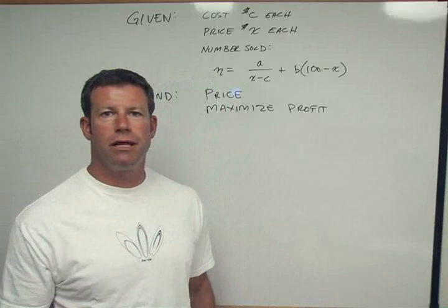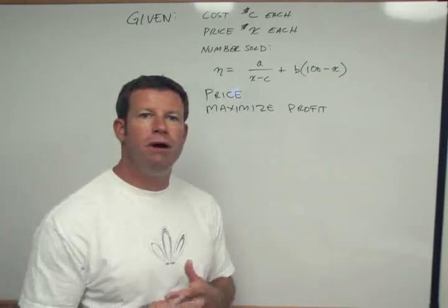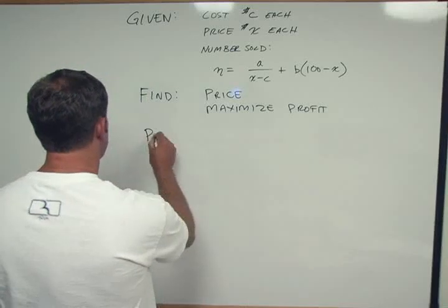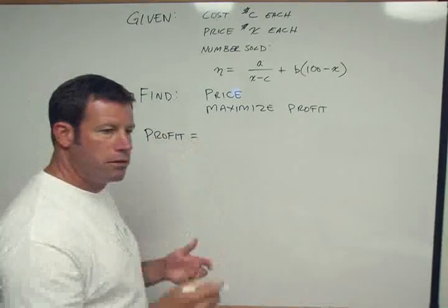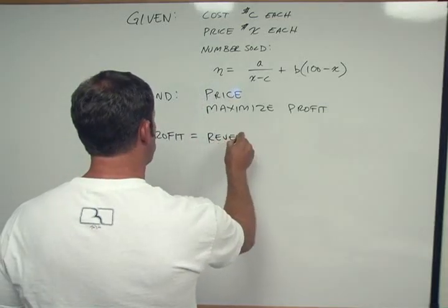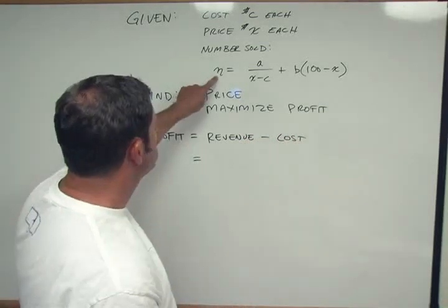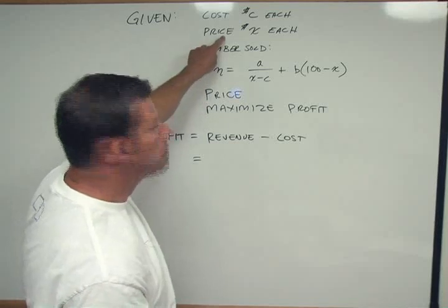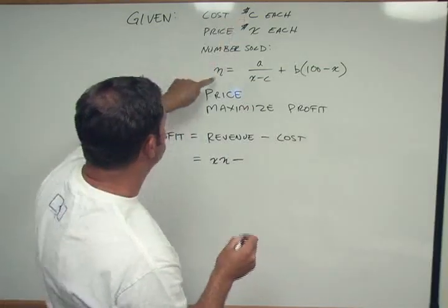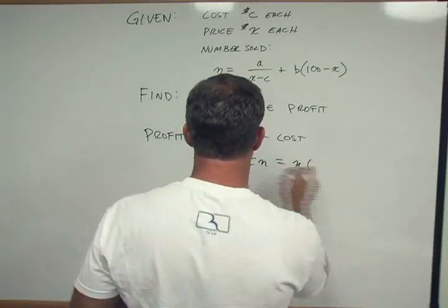So now let's see if we can come up with a reasonable answer for this problem. The first thing is we have to decide what is profit. So before we can even get into math or calculus, we have to decide where does profit come from? Well profit is equal to the amount that we generate minus the amount that we have to pay. So revenue minus cost. And so we have number sold n times the price is going to be our revenue. And cost is going to be C times the number sold. We can simplify this to be N times X minus C.